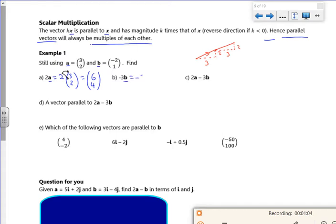Minus 3b, so minus 3 lots of (-2, 1). So that's going to be minus 3 times minus 2.